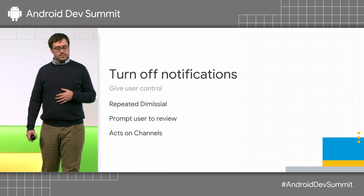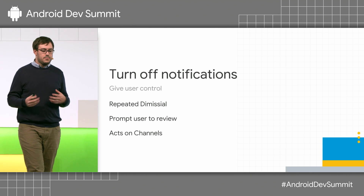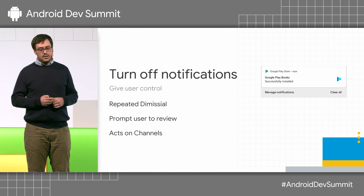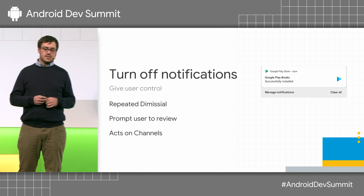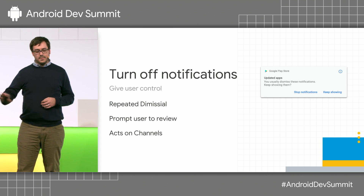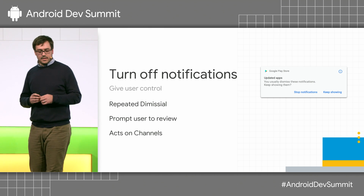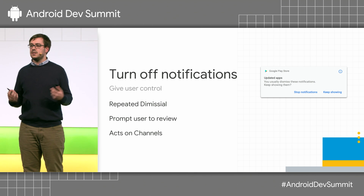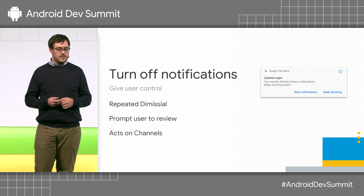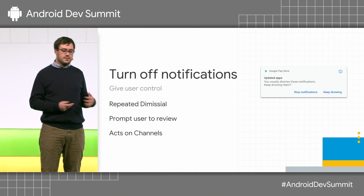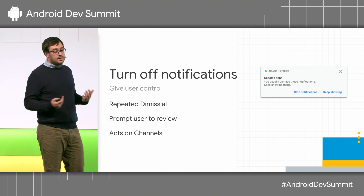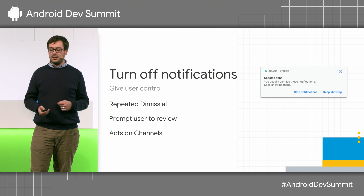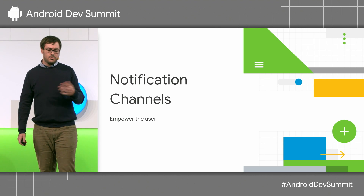Respect the user. Otherwise they might just turn off your notifications and you've got no way of communicating to them. They might even choose to uninstall your app. There are platform features that deliberately enable notifications being turned off. In Android P, we prompt the user when they keep swiping away a notification: do you really care about this notification? This acts on channels, so if you're not describing your channels correctly, this can lead to some confusion and perhaps lost notifications.